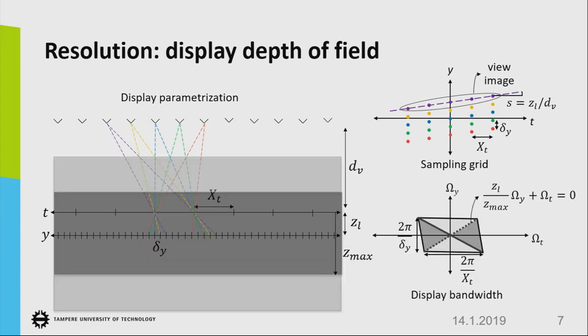If you go to the Fourier domain, we can see that this region, the dark gray region, is the bandwidth of the display. In that region, we can use the display with full resolution. When we go out of this region, we can see that this line cuts the spatial samples here.